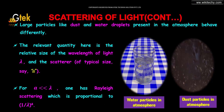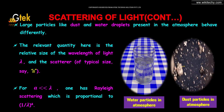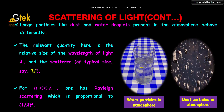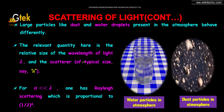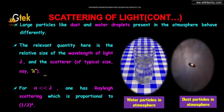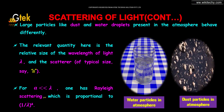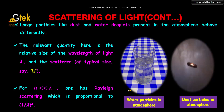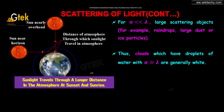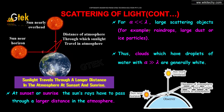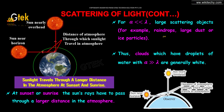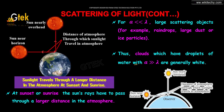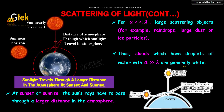Large particles like dust and water droplets present in the atmosphere behave differently. The relevant quantity here is the relative size of the wavelength of light lambda and the scatterer of typical size A. For A less than lambda, one has Rayleigh scattering, which is proportional to 1 over lambda to the power 4. For A really greater than lambda — large scattering objects such as raindrops, large dust, or ice particles — clouds which have droplets of water with A much greater than lambda are generally white in color.